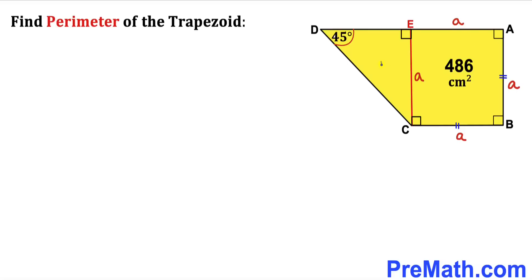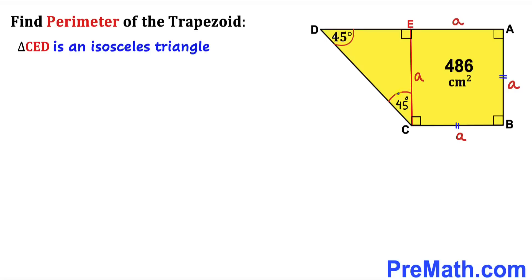Now let's focus on triangle CED. This is a right triangle since this angle is 90 degrees, and we know that angle ADC is 45 degrees. Since the sum of angles in any triangle is 180 degrees, this remaining angle has to be 45 degrees as well. Therefore triangle CED is an isosceles triangle — since these two angles are equal, side length CE equals side length DE. We know CE is a, so DE is a as well.